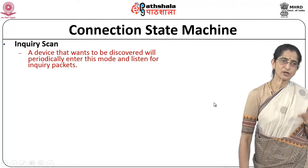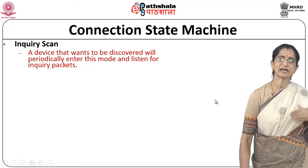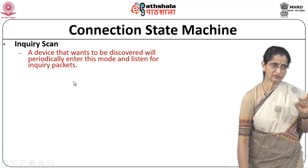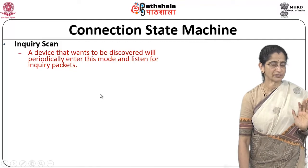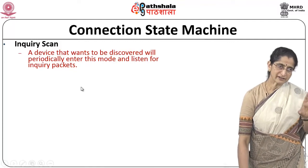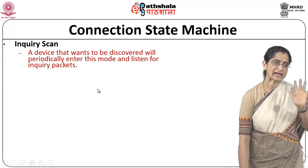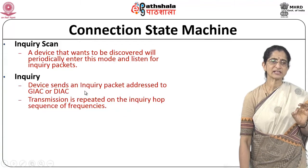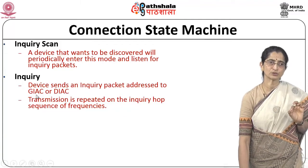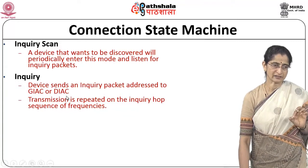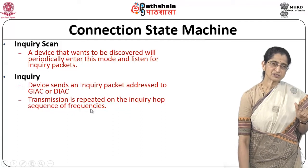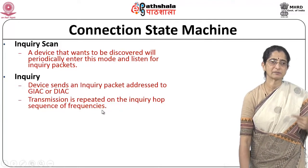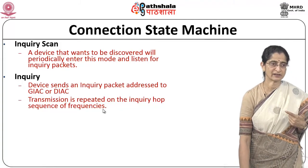Inquiry is used to identify and find out which devices are available in the region. A device that wants to be discovered will periodically enter the inquiry scan state and listen for inquiry packets. The inquiry state is where a device sends an inquiry packet addressed either to the general access code or a dedicated IAC. This transmission is repeated on a sequence of frequencies — called a 16-channel train — rather than just once.